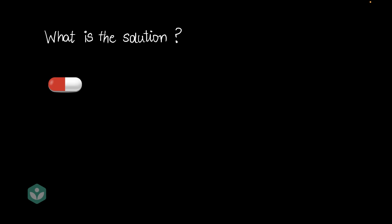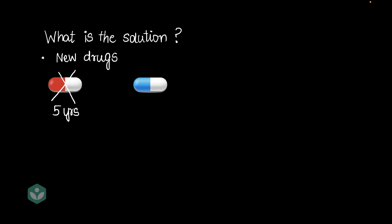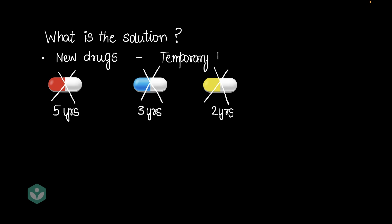So what is the solution? Initially, we started making new antibiotics. A new antibiotic would last five years, then the bug learned to defeat it, so we made another, and then another. But each new drug failed in even shorter time. We realized that this policy of making new antibiotics is just a temporary fix.